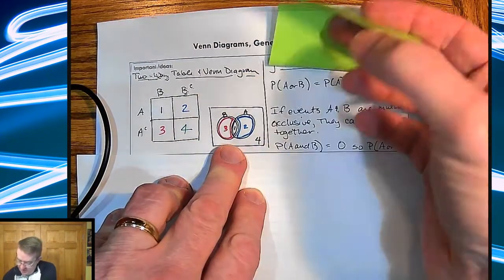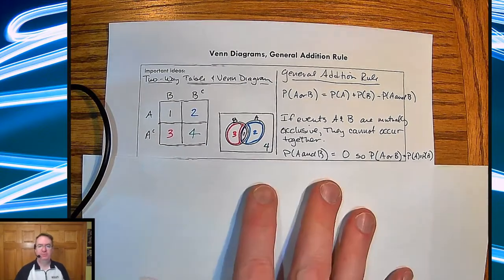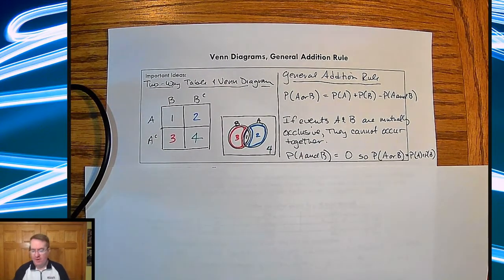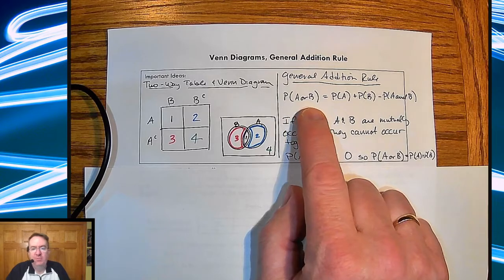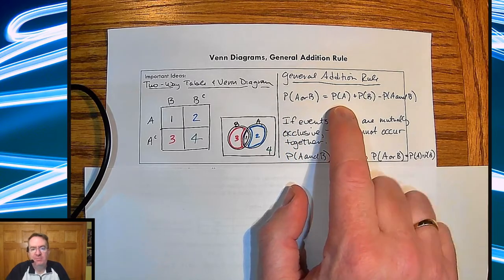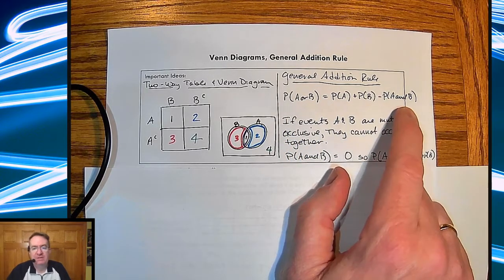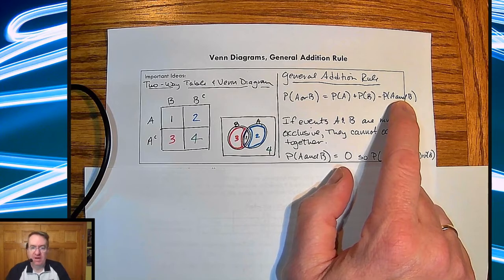Over here is the general addition rule. This is going to get you pretty far, and we'll address a couple of things here. First of all, the probability of A or B happening is equal to the P of A, probability of A, plus the probability of B, minus the probability that both items happen.